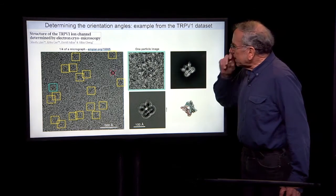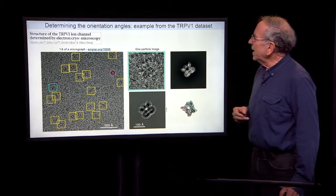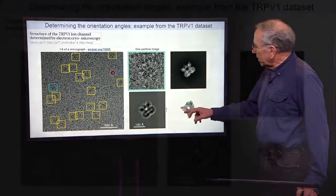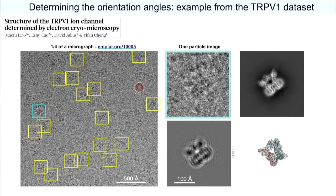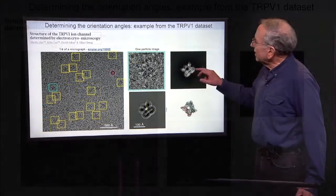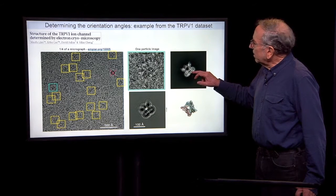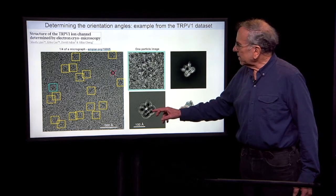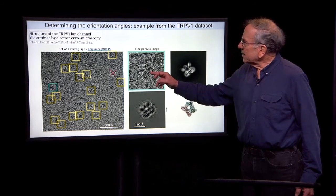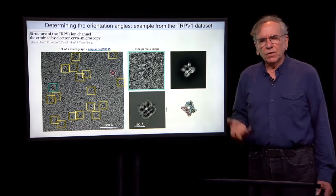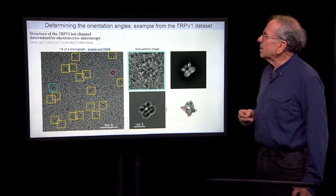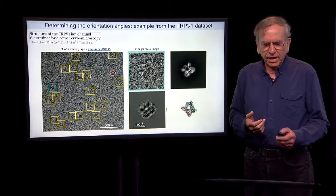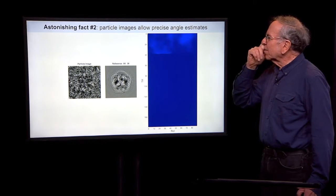It's a difficult problem because there's not a lot of information in one of these images. We start with a three-dimensional structure and a three-dimensional density, model what the microscope does to that density, and determine what the microscope image is expected to look like. As actually recorded with a lot of noise, the image looks very blurry. The question is: can we somehow from this image determine what is the orientation of the underlying three-dimensional particle?